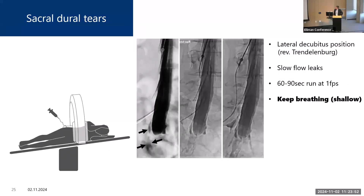For sacral dural tears, the patient is positioned in the lateral decubitus position on the side where the leak is most likely, and we use reverse Trendelenburg position to direct contrast to the lower spine. We perform a 60 to 90 second run with the patient breathing. These leaks can be very slow-flow in my experience, so an alternative would be CT myelography.